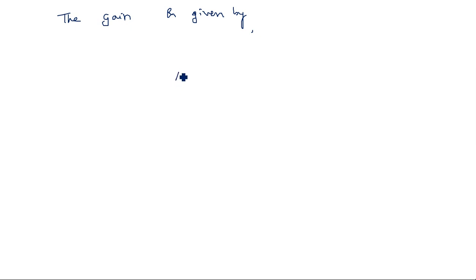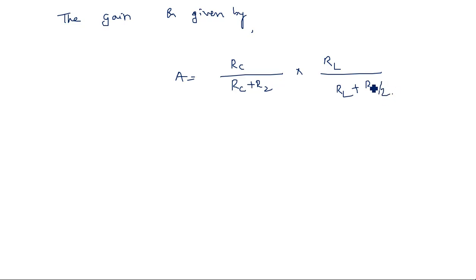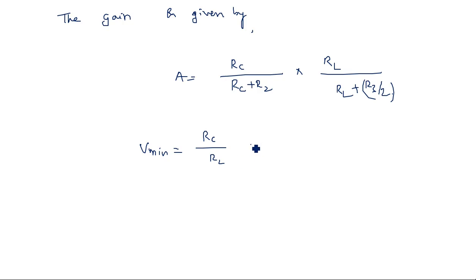The gain of the four diode sampling gate is given by: A = (Rc / (Rc + R2)) × (RL / (RL + R3/2)). Also, the Vmin of this circuit relates to the gate control potential, and V_minimum = (Rc/R2) × (Rc/R2) × (R3 / (R3 + R2)) × input voltage Vs.